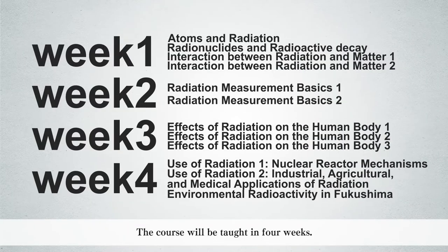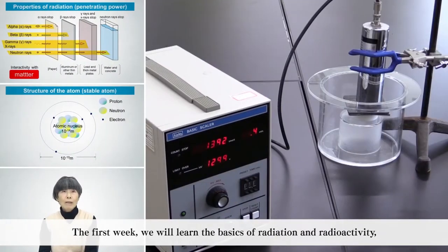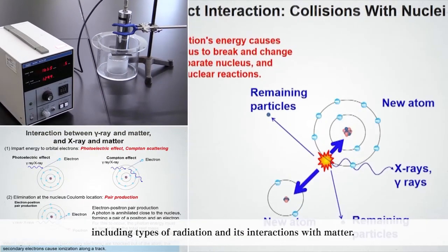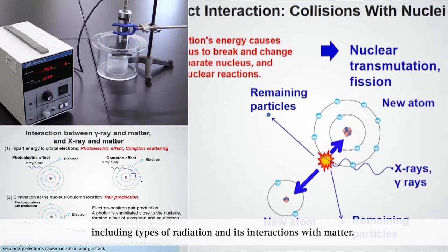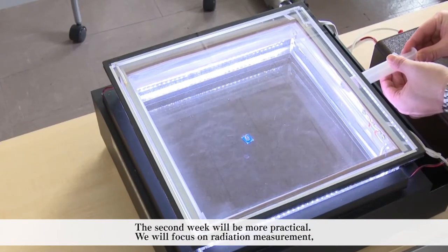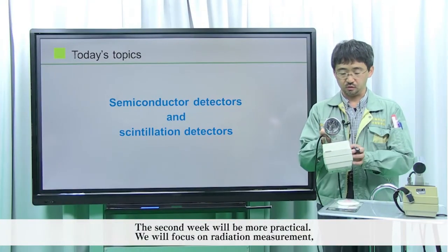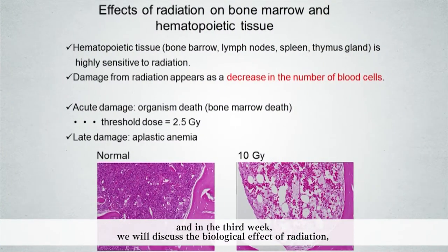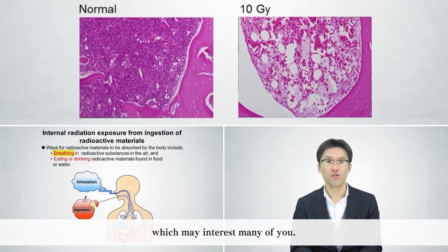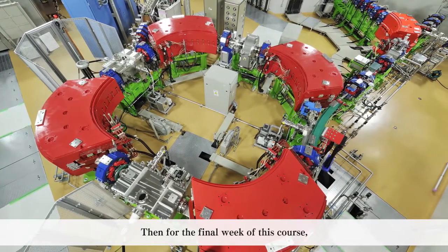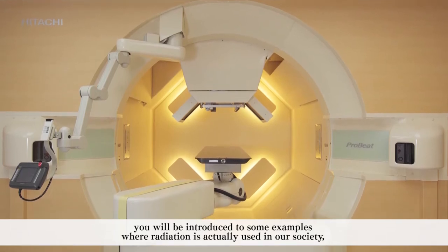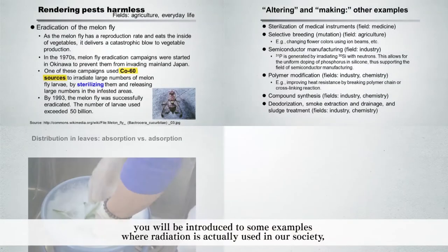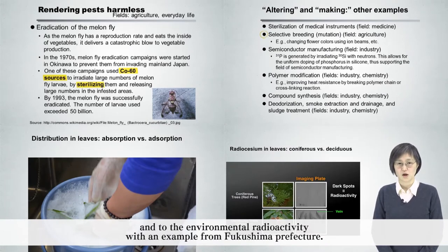The course will be taught in four weeks. The first week, we will learn the basics of radiation and radioactivity, including types of radiation and its interactions with matter. The second week will be more practical — we will focus on radiation measurement. In the third week, we will discuss the biological effect of radiation, which may interest many of you. Then for the final week, you will be introduced to examples where radiation is actually used in our society, and to environmental radioactivity with an example from Fukushima Prefecture.